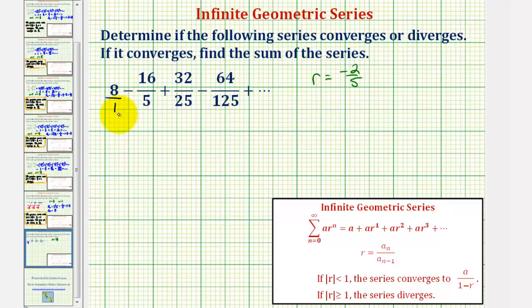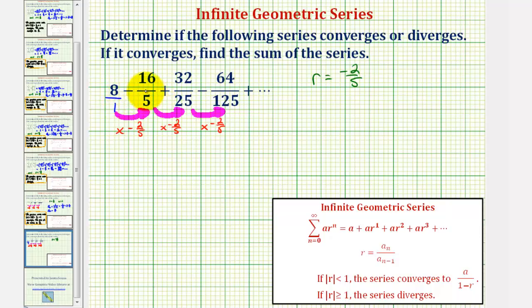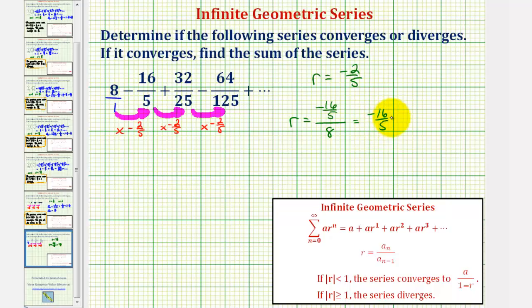The pattern is that to find subsequent terms we multiply by negative 2/5. If we can't determine R directly, we can take any term and divide by the previous term. Using the second and first terms: negative 16/5 divided by 8 is the same as negative 16/5 times 1/8. Simplifying gives the common ratio of negative 2/5.